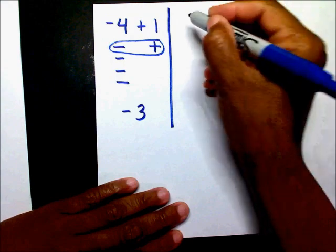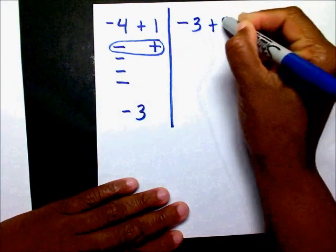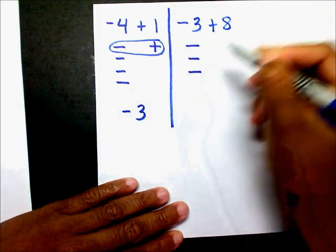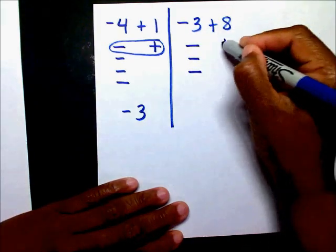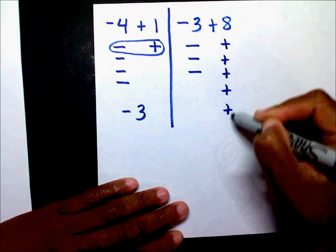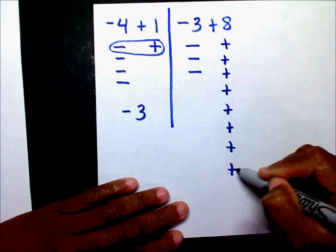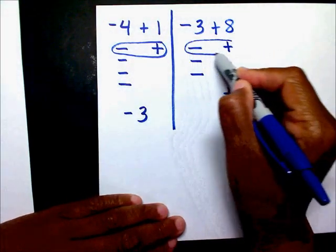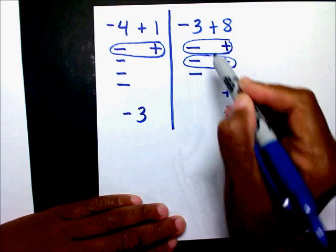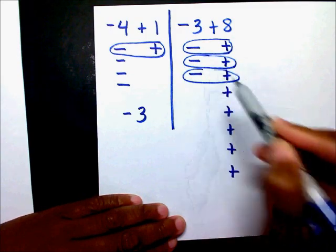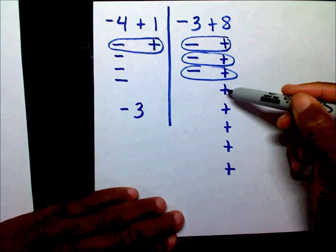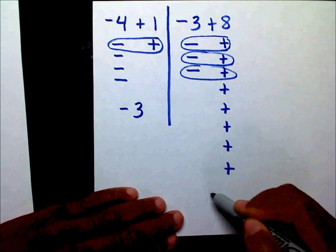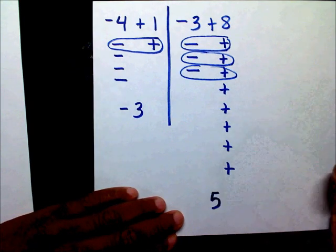The next problem is negative three plus eight. I'm going to show three negatives and eight positives. Let me create my zero pairs — there's a zero, there's a zero, and there's a zero. What's left? One, two, three, four, five — you have five positives. So the answer is positive five.